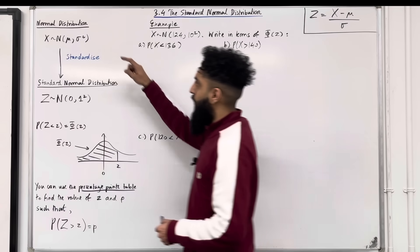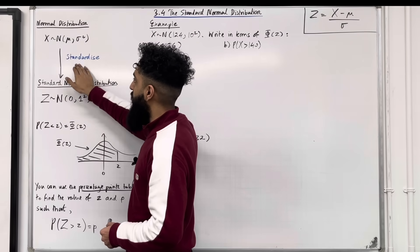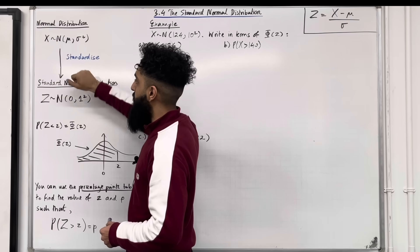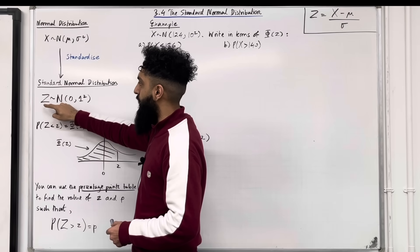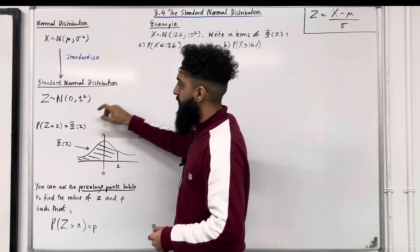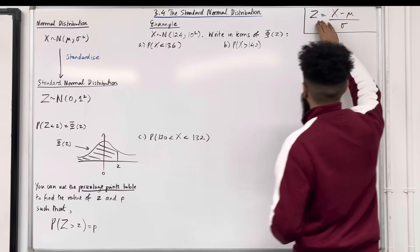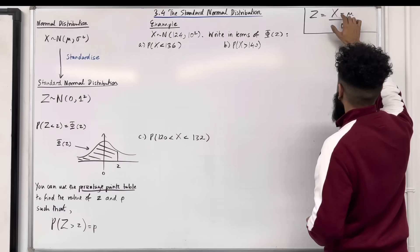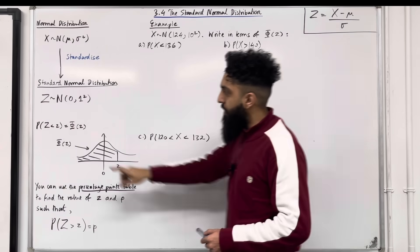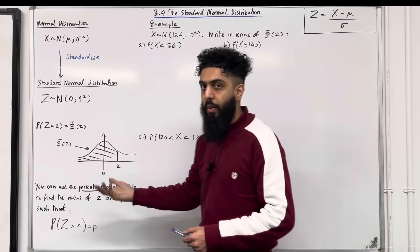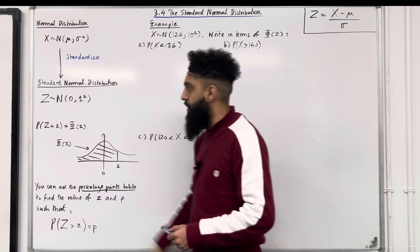Over here we have a normal distribution X with mean mu and variance sigma squared. We can apply a process called standardizing to transform it into a standard normal distribution represented by capital Z. For a standard normal distribution, the mean is 0 and the variance is 1 squared. Here is the formula to standardize: to get capital Z, you take capital X, subtract the mean, and divide by the standard deviation. Probability capital Z is less than lowercase z is equal to phi of Z — that is another way of writing that probability for a standard normal distribution.